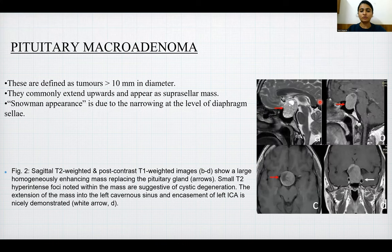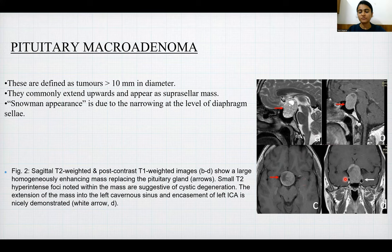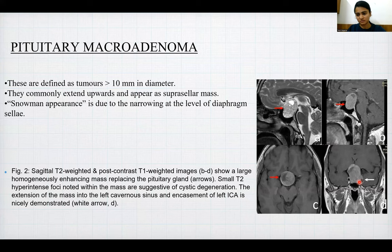Pituitary macroadenoma: these are defined as tumors more than 10 mm in diameter. They commonly extend upwards and appear as a suprasellar mass, usually showing a snowman appearance due to narrowing at the level of the diaphragma sellae. Sagittal T2-weighted and post-contrast T1-weighted images show a large homogeneously enhancing mass replacing the pituitary gland, with small T2-hyperintense foci suggestive of cystic degeneration. Extension into the left cavernous sinus with encasement of the left internal carotid artery is also demonstrated.